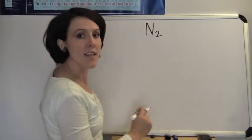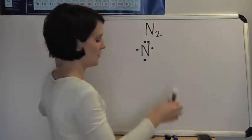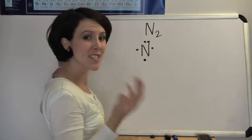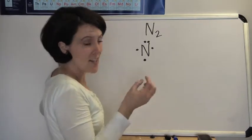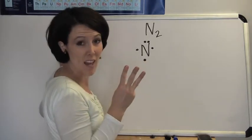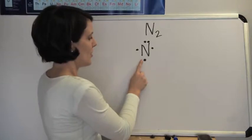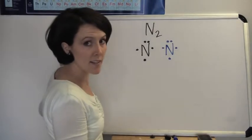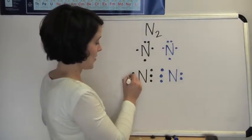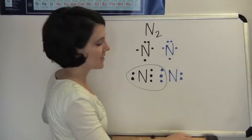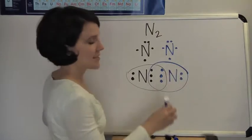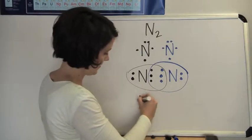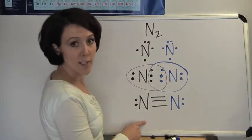Nitrogen is my next diatomic. The Lewis symbol looks like this — nitrogen needs three additional electrons to achieve the octet. The most stable electron configuration is that of a noble gas. The other nitrogen looks the same. Nitrogen will actually form a triple bond, so each nitrogen believes it has eight electrons and is stable. You can simplify that picture by drawing three lines between the two nitrogens — that is the Lewis dot structure for elemental nitrogen.